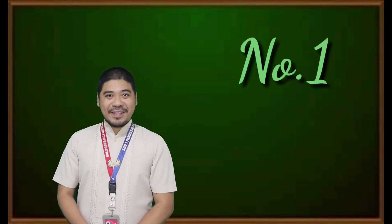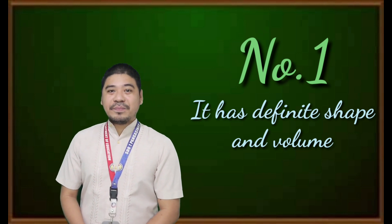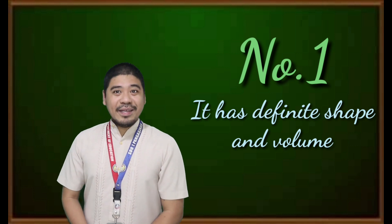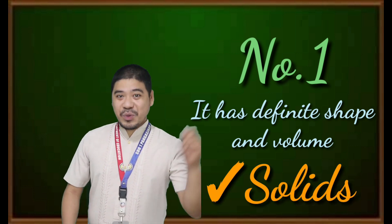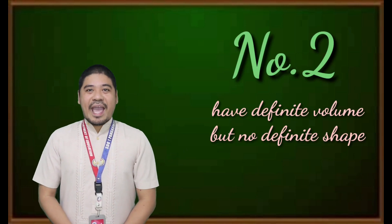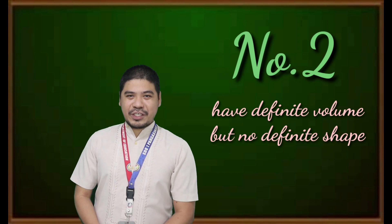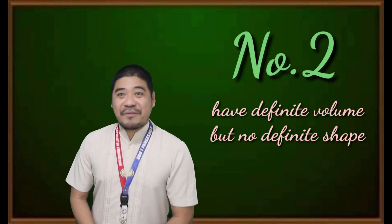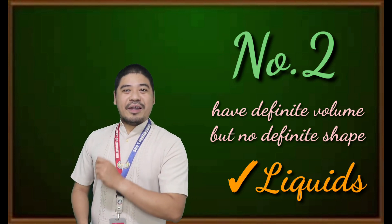Number one: it has definite shape and volume. If your answer is solid, then you are correct. Number two: have definite volume but no definite shape. If your answer is liquids, then you are correct.